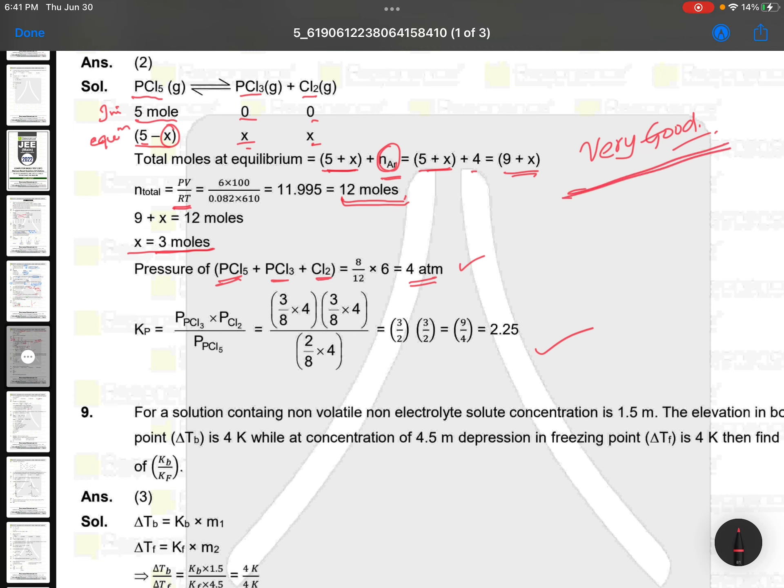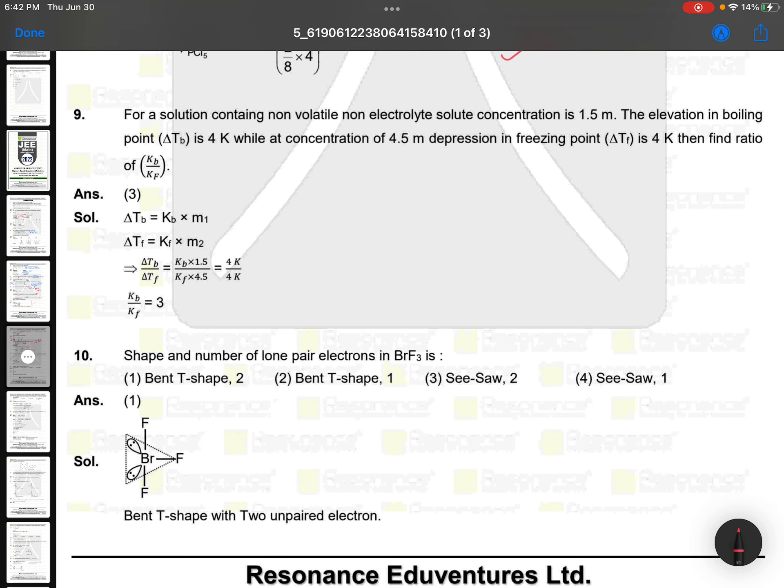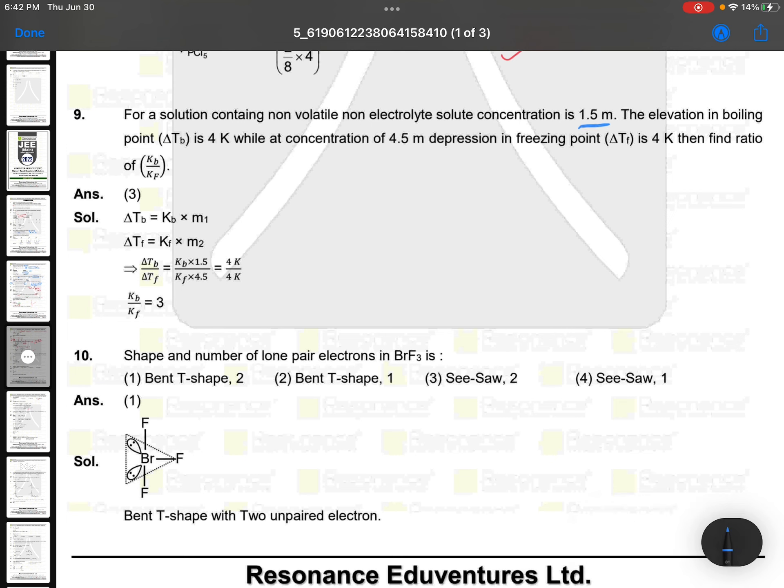For a solution containing non-volatile non-electrolyte with concentration 1.5 molar, the elevation in boiling point is 4 Kelvin. Concentration is 4.5, depression in freezing point is 4 Kelvin. So delta Tb and delta Tf values 4 and 4. Then Kb × 1.5 = 4, Kf × 4.5 = 4. Very simple. Kb/Kf value is asking: 1.5/4.5. Delta Tb = Kb·m, delta Tf = Kf·m. My regular students, today we were discussing this topic.